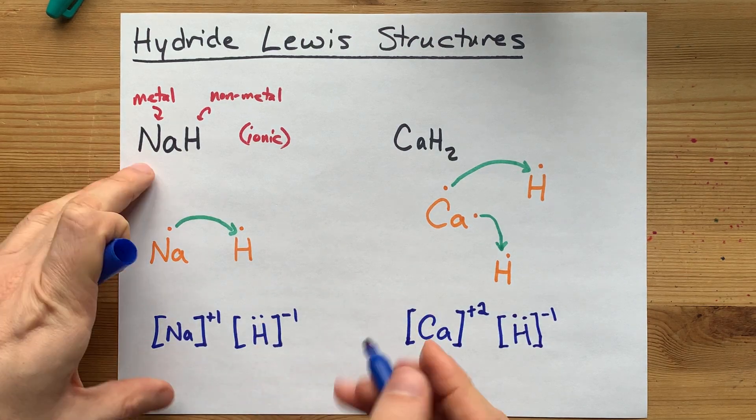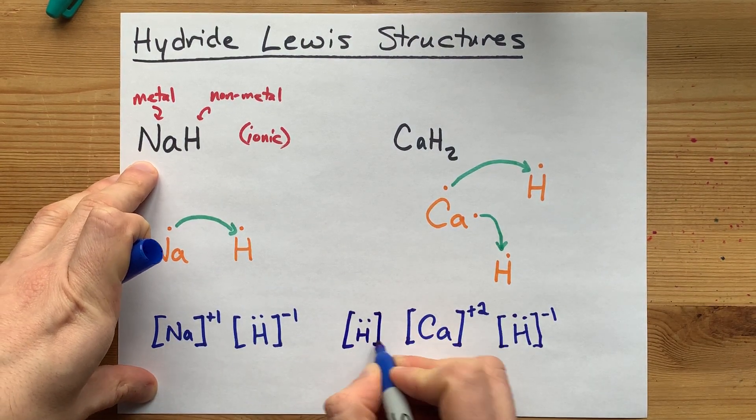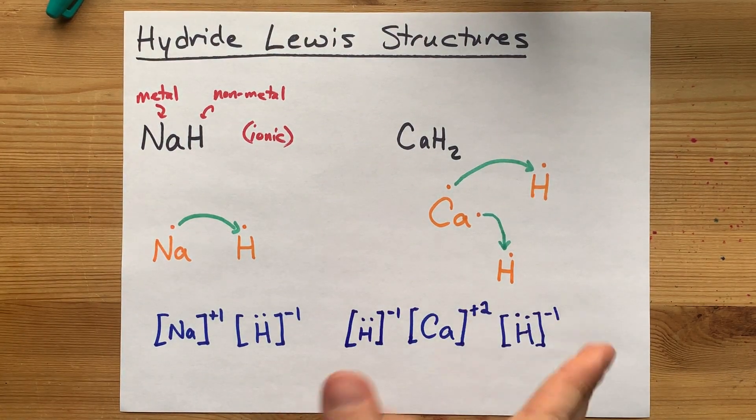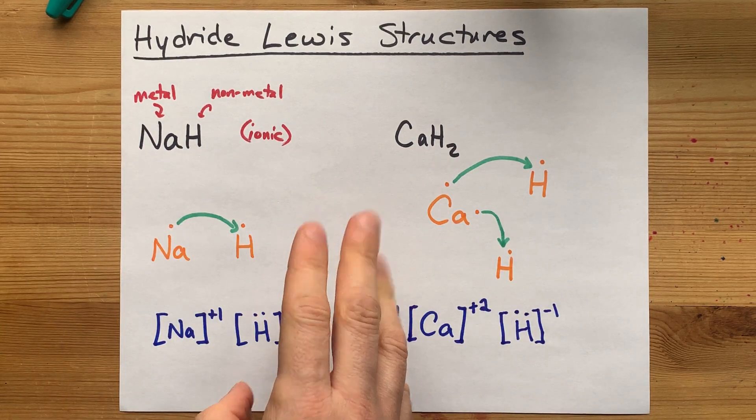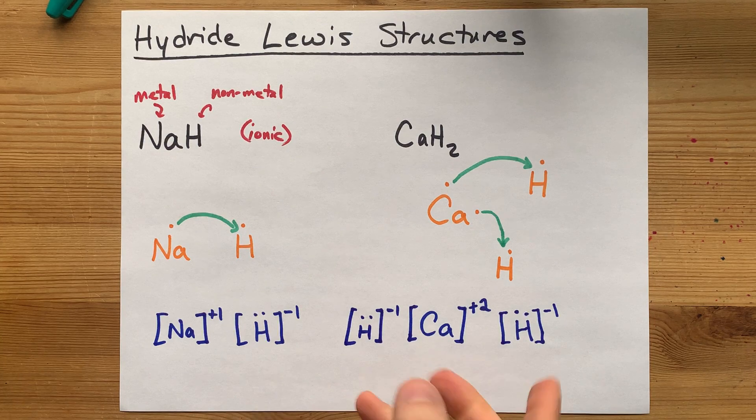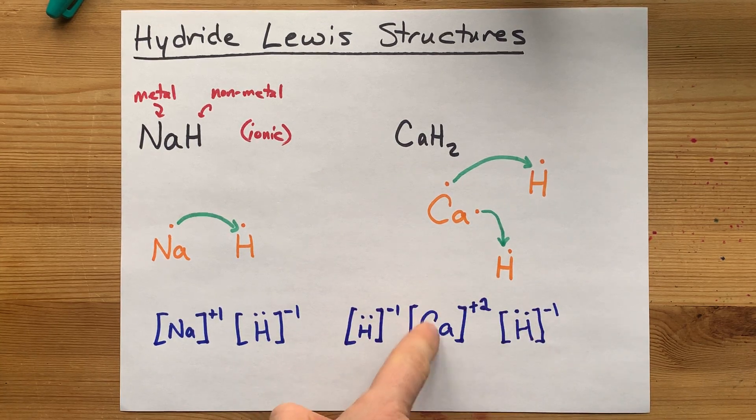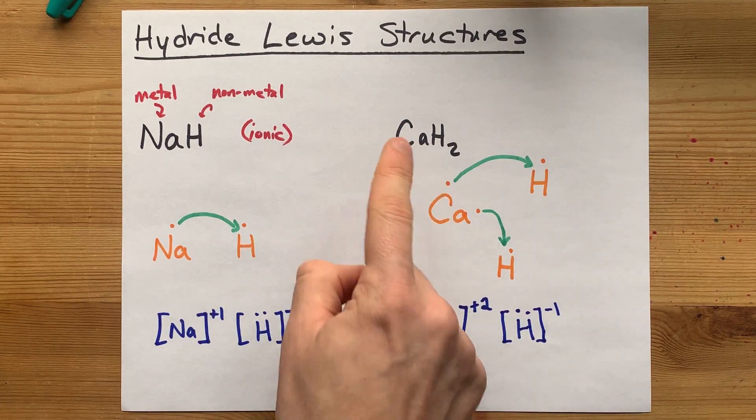There is your hydride ion. Now, I have two of them, so I should probably draw a second hydride ion on the opposite side. There we go. There's your completed Lewis structure. For both calcium and sodium hydride, all other metal hydride Lewis structures will look like these. You'll just have a different number of H's, depending on how many H's you need to satisfy the metal's positive charge.